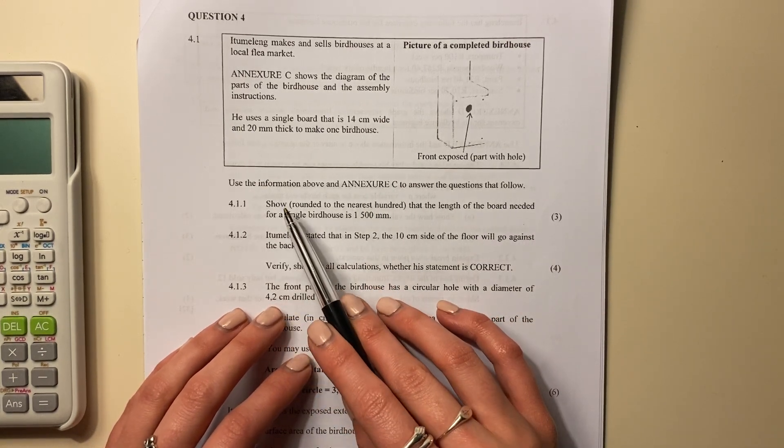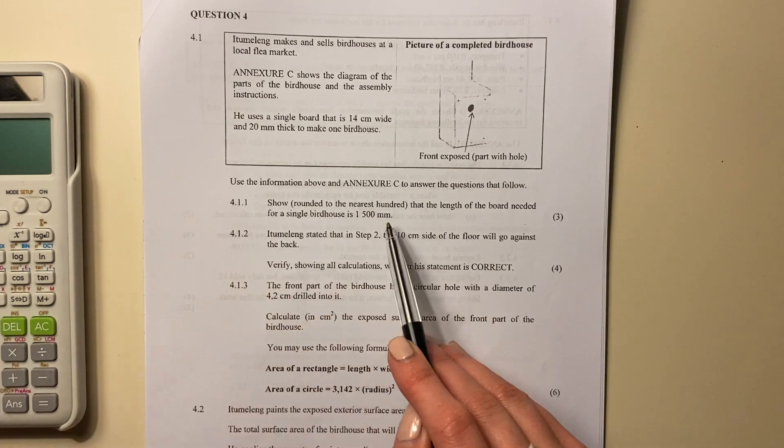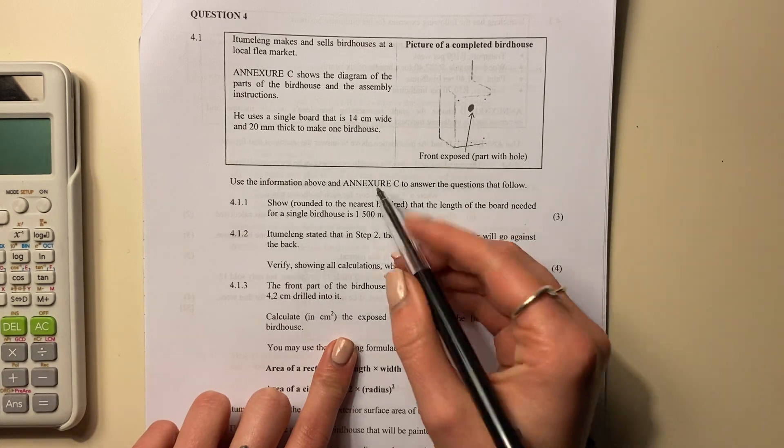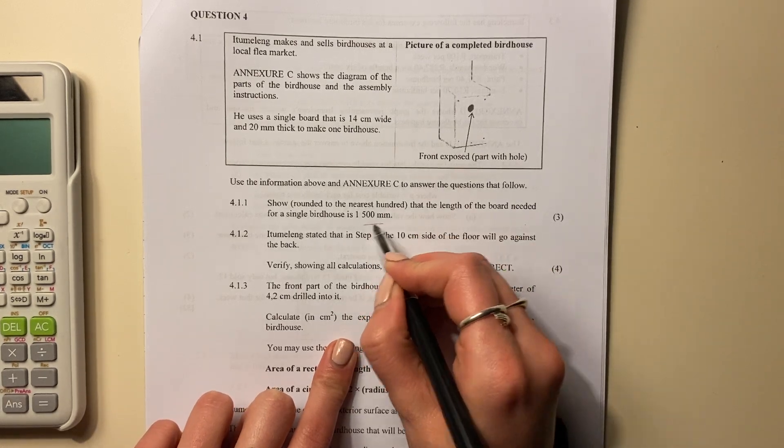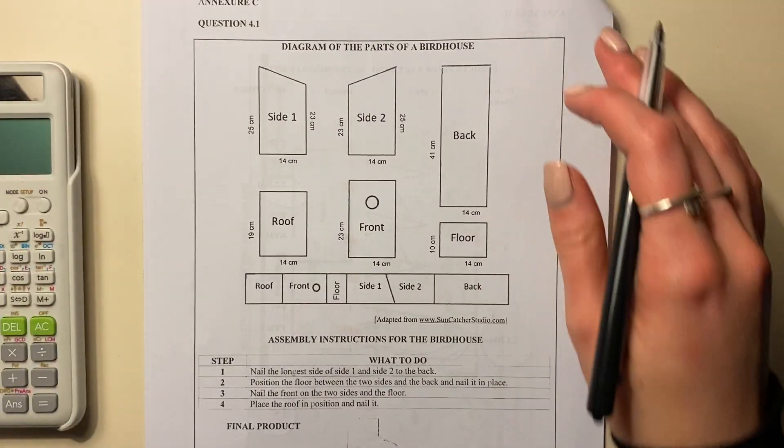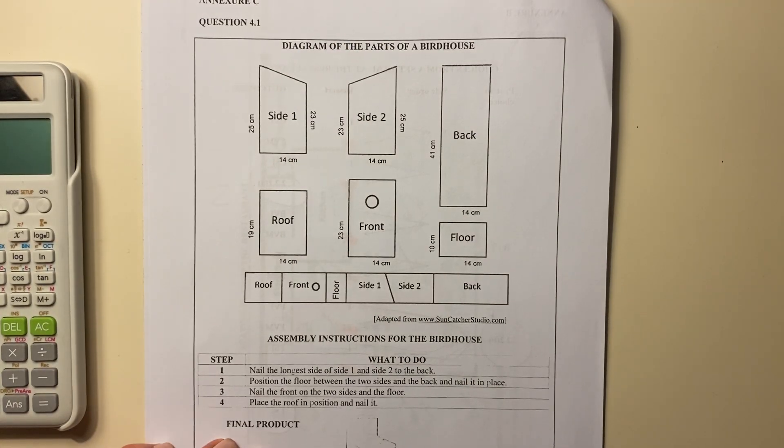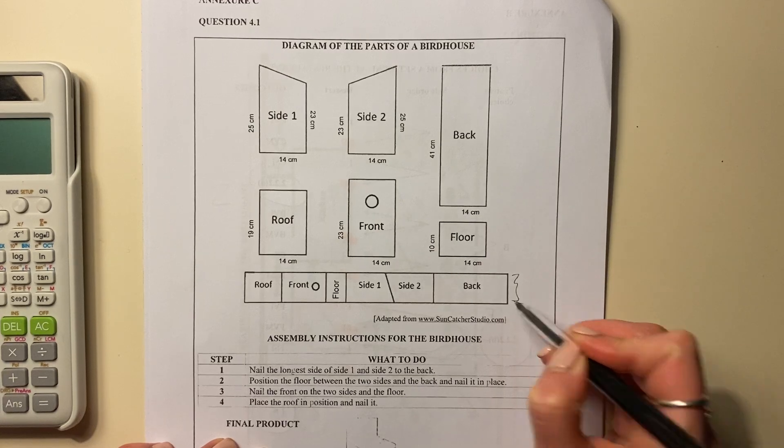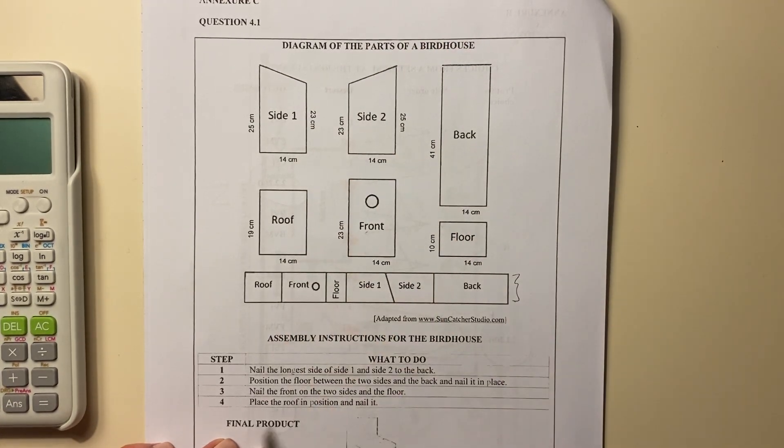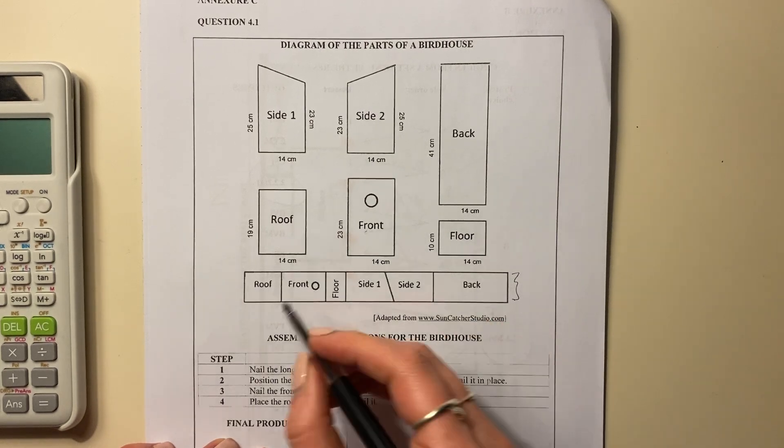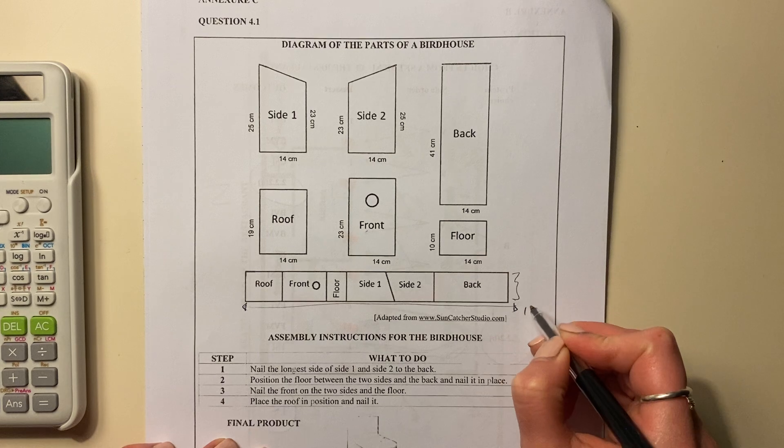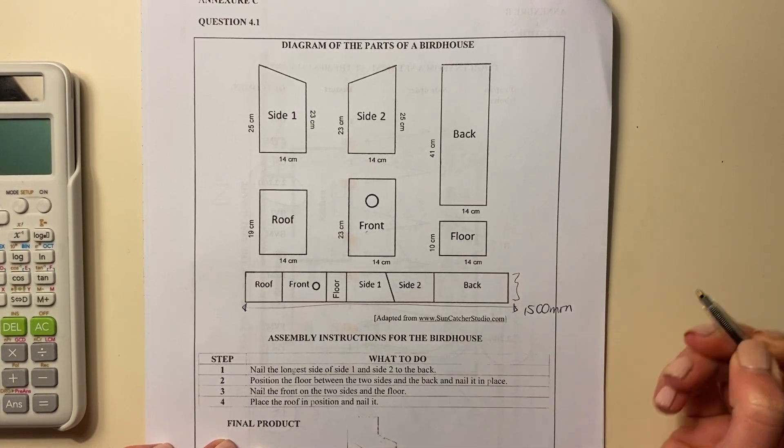4.1.1 show, rounded to the nearest hundred, that the length of the board needed for a single birdhouse is 1,500 millimeters. Okay, so let's look at that. So here is everything that we're looking at. These are all the pieces. So this board here, there's one board, right? It's split into these four pieces or six pieces. Sorry, my counting is bad there. And they're wanting us to basically show that this length here is this many millimeters.